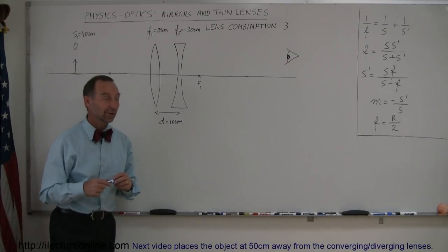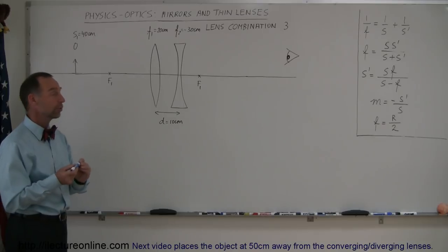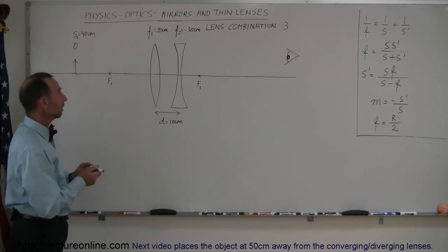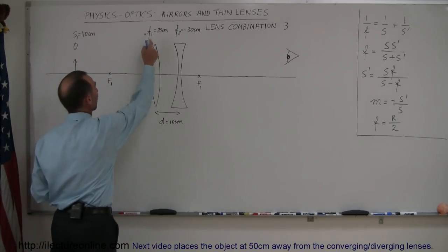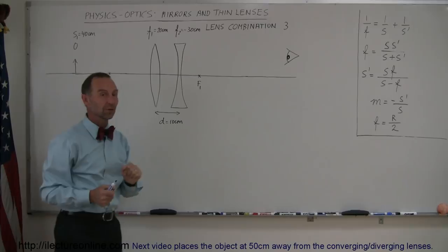Welcome to iLecture Online and here's combination number three for lens combinations. In this case we are going to combine a converging lens with a focal length of 20 centimeters and a diverging lens with a focal length of minus 30 centimeters.